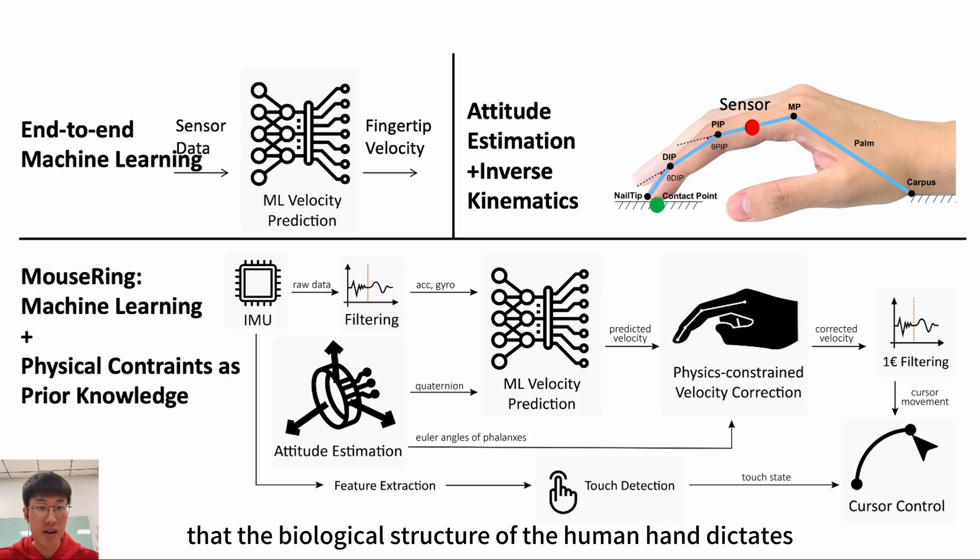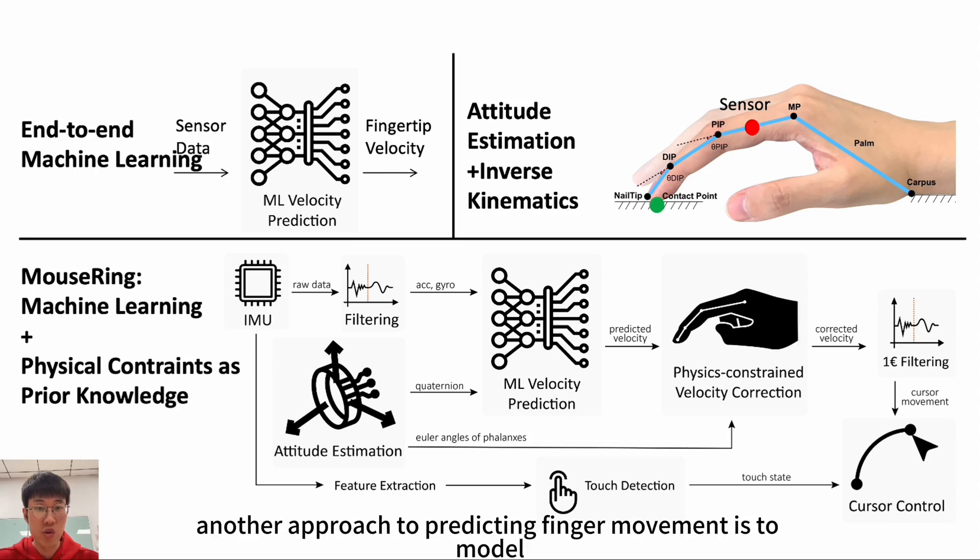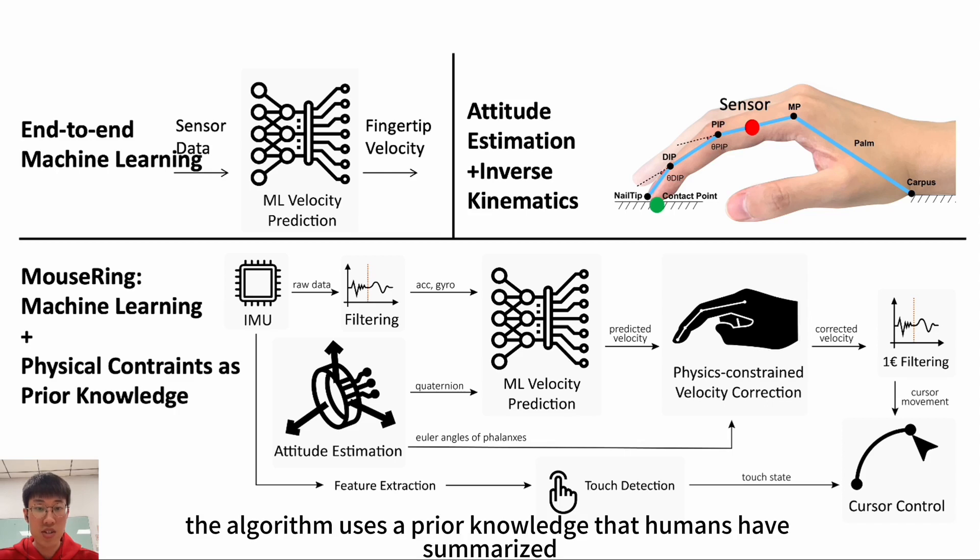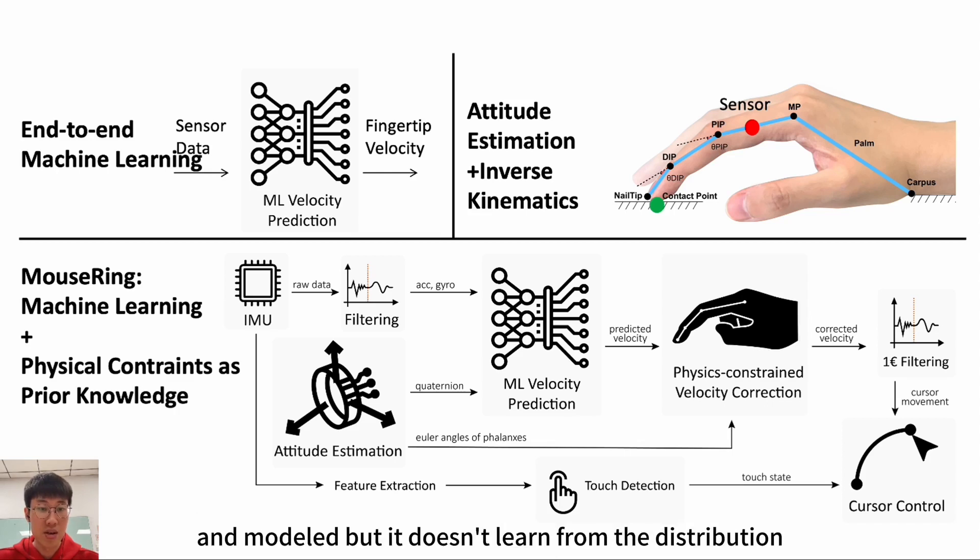We know that the biological structure of the human hand dictates that it follows certain physical laws through movement. Therefore, another approach to predicting finger movement is to model the hand as a chain of joints in motion. We regard the sensor and the contact points of the fingers as points in a kinetic chain. Then, we can estimate their movement through attitude angle estimation and inverse kinematics. As shown in the top-right diagram, we estimate the movement of the fingertip represented by the green points using the sensor represented by the red point. In this framework, the algorithm uses prior knowledge that humans have summarized and modeled. But it doesn't learn from the distribution of a large amount of sensor data, leading to systematic errors due to insufficient modeling.